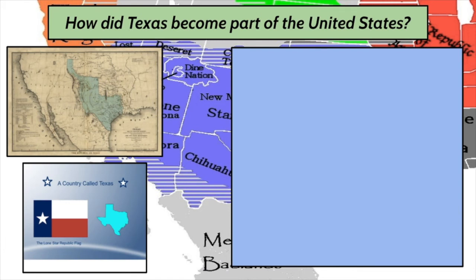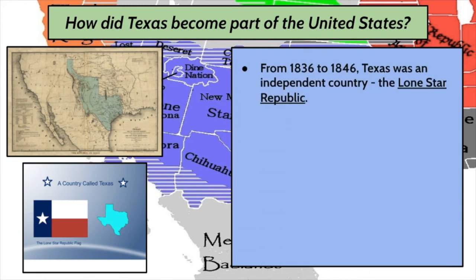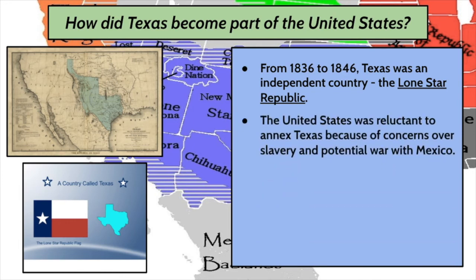How did Texas become part of the United States? Texas was fighting to become its own independent republic, and for 10 years it actually was. From 1836 to 1846, Texas was the Republic of Texas — also known as the Lone Star Republic, because Texas is famous for having the single star on its flag. The United States was reluctant to annex Texas for two reasons: first, the slavery issue — Northerners opposed slavery, and if Texas was admitted it would almost certainly be a slave state. Second, Mexico was upset about losing the Texas independence struggle, and annexation could mean war with Mexico.